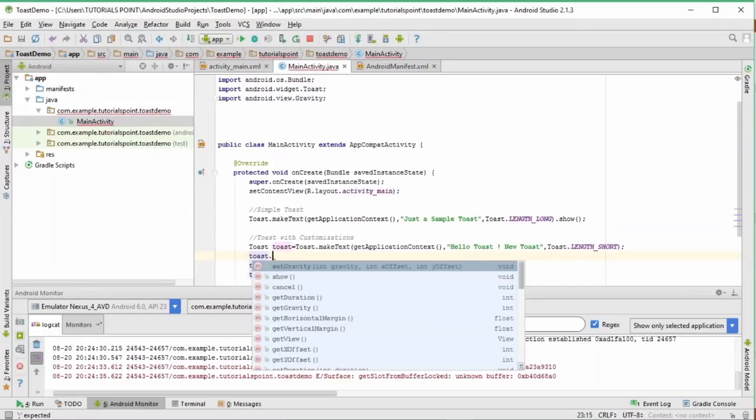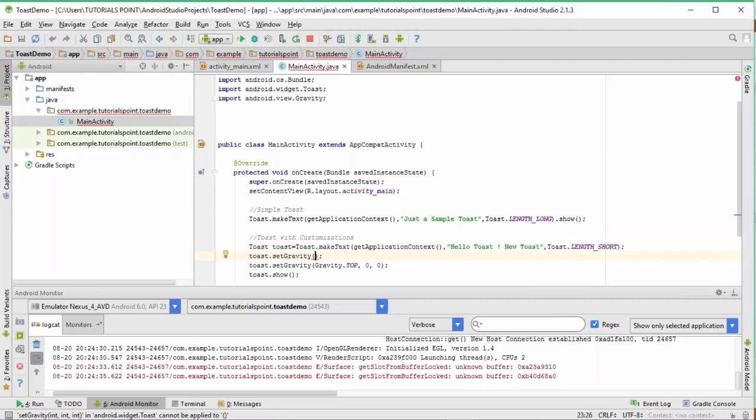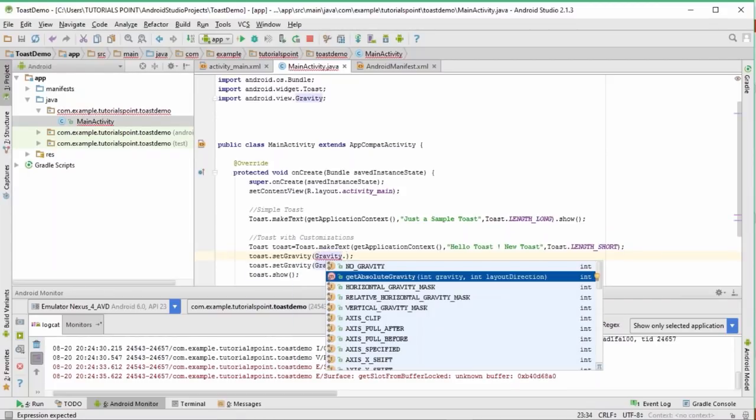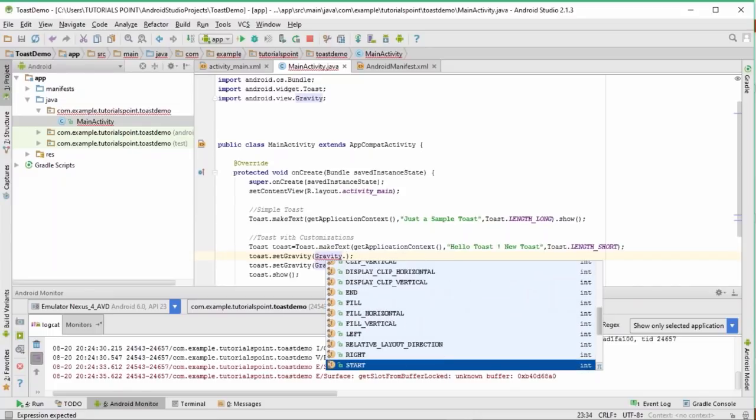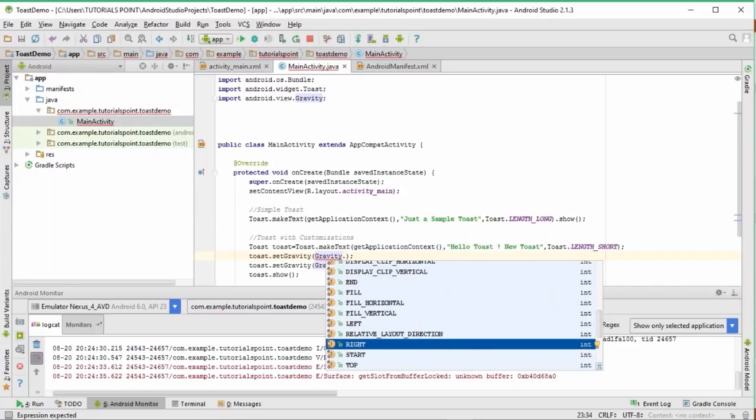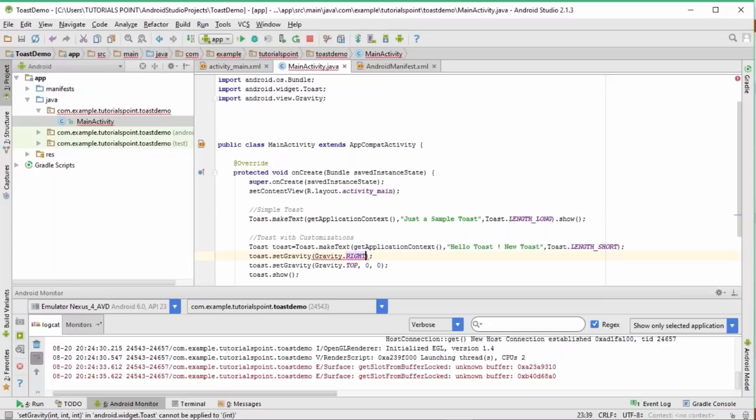This all can be my gravity. I choose it as right. And I pass the offset. So, here the toast would be on the right position. Let me run this one for you.